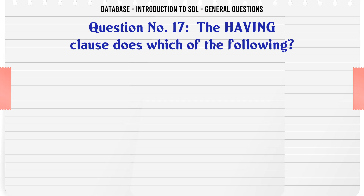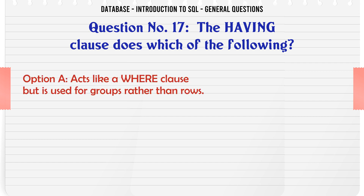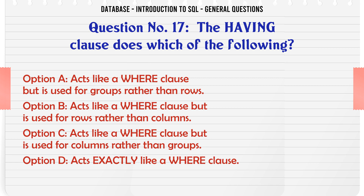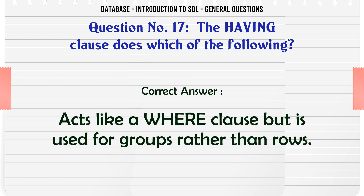The HAVING clause does which of the following? A. Acts like a WHERE clause but is used for groups rather than rows. B. Acts like a WHERE clause but is used for rows rather than columns. C. Acts like a WHERE clause but is used for columns rather than groups. D. Acts exactly like a WHERE clause. The correct answer is: acts like a WHERE clause but is used for groups rather than rows.